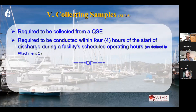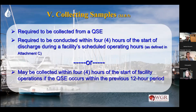Let's talk about collecting samples. How many samples do you need to collect? The stormwater year starts July 1st and ends June 30th. In that time, the permit breaks it down into two halves. The first half is between July and December, and the second half is between January and June. The general permit says you need to conduct samples in the first half and the second half.